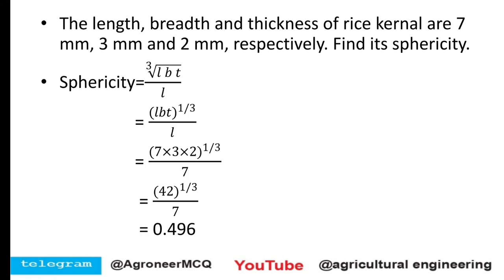One more formula: if an object has volume V, diameter d, and surface area S, then sphericity equals 6 × V divided by (d × S). Remember: sphericity = 6V / (d × S).